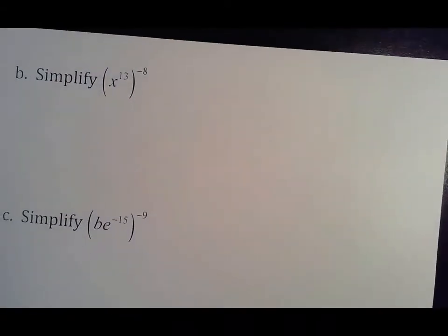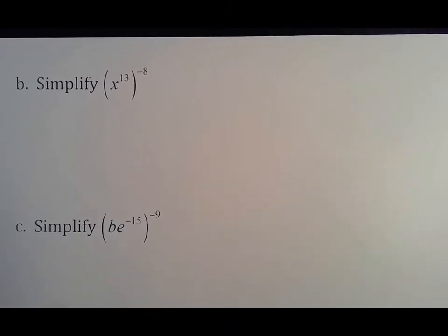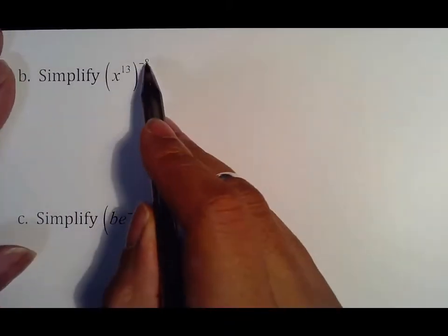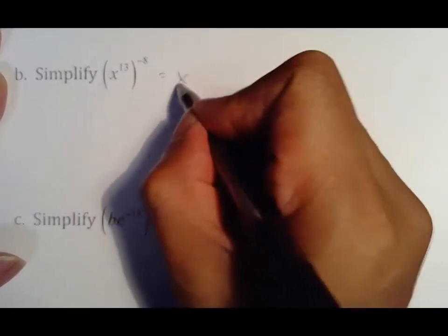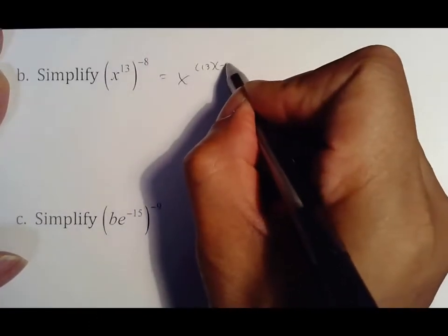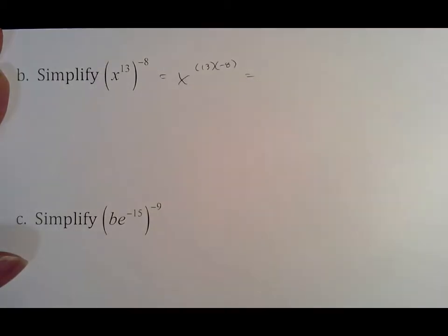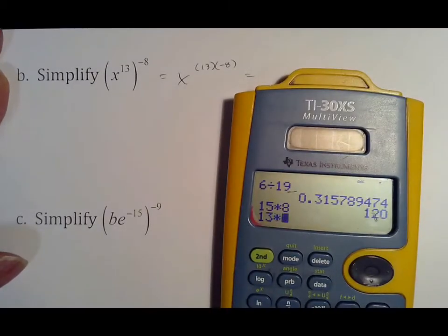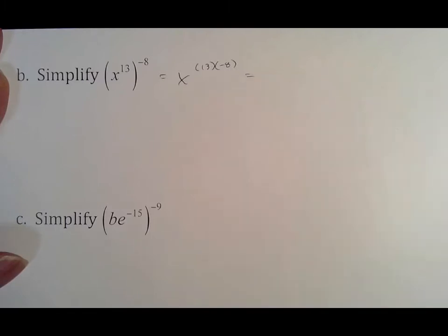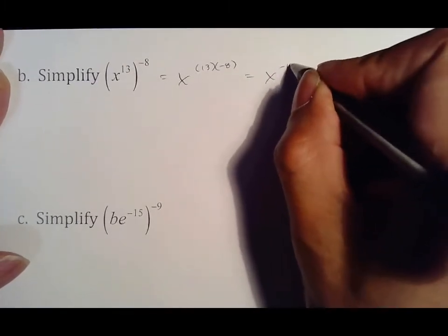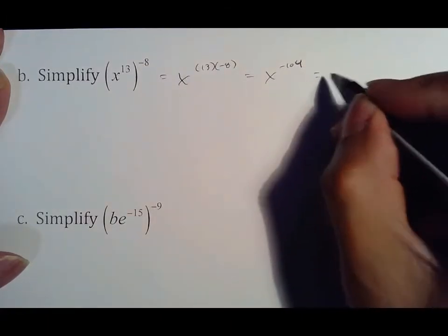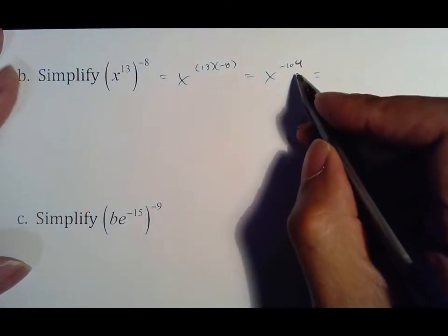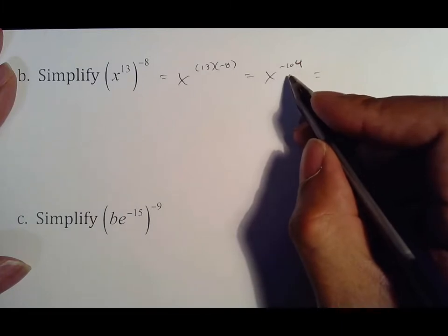Separated by parentheses means multiply. Make sure you know that. Your negative 8 is separated from 13 by parentheses, which means it's x to the 13 times negative 8, which means it's negative 104. But remember we can't leave a negative exponent.